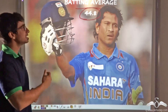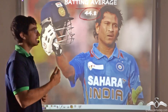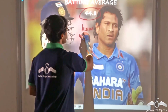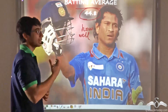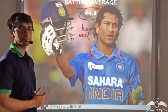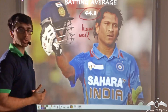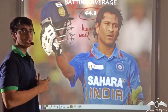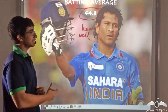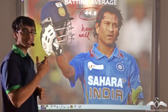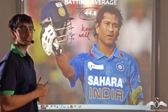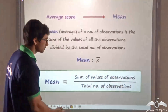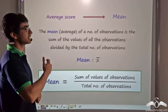The batting average is a measure of how well the batsman is going to perform in the next innings and how well he has performed in the past. The batting average is found out by summing up the entire runs that the batsman has scored in his career till that date, divided by the total number of times he has been dismissed. That gives us the average score.